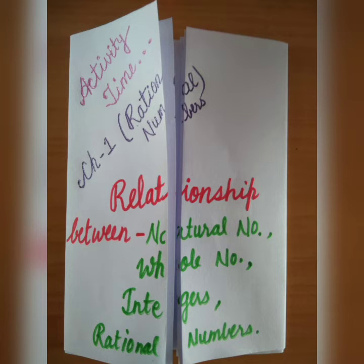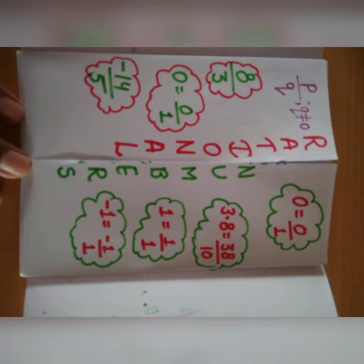On the first door, we write about the relationship between the different numbers. Now we will open the next door which is the second one. Here we will write rational numbers which is in the form of P upon Q and Q is not equal to zero.